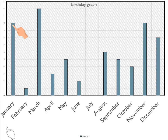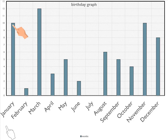Which month has the biggest number of birthdays? March. Which month has the smallest number of birthdays? February. When I ask 'which,' you must answer with a month.